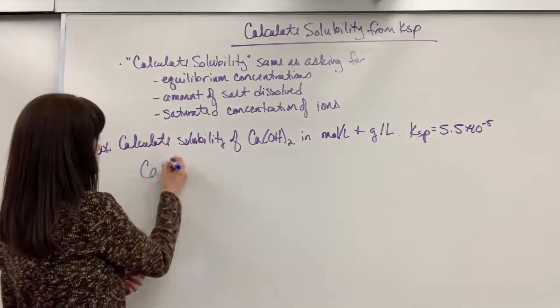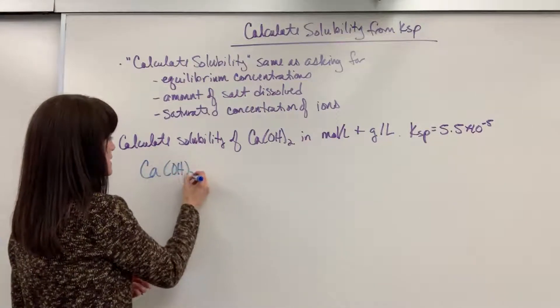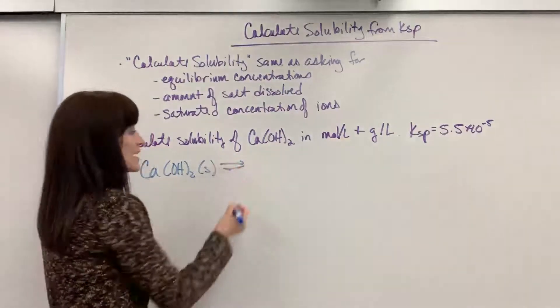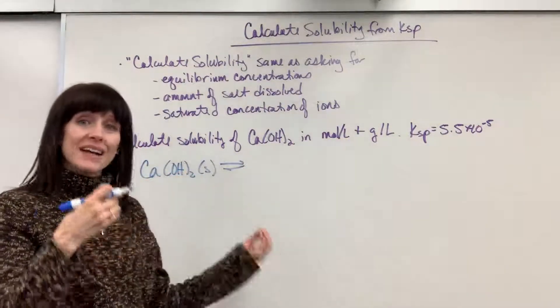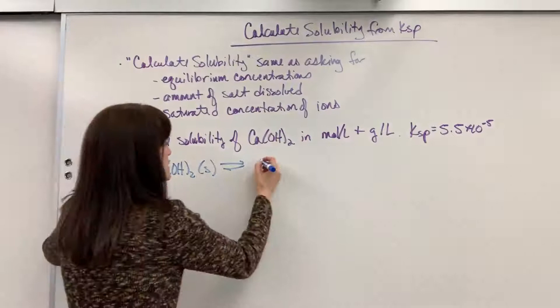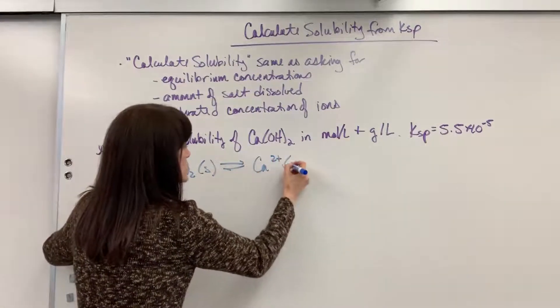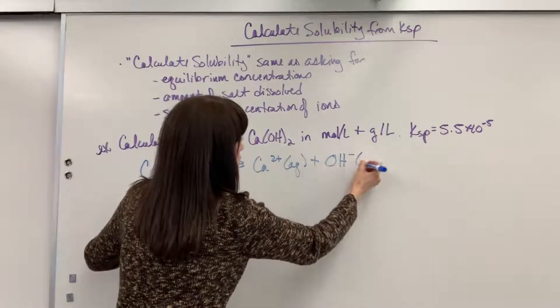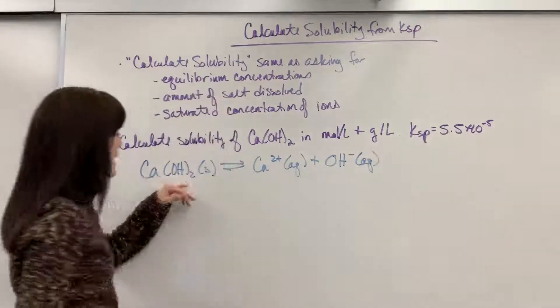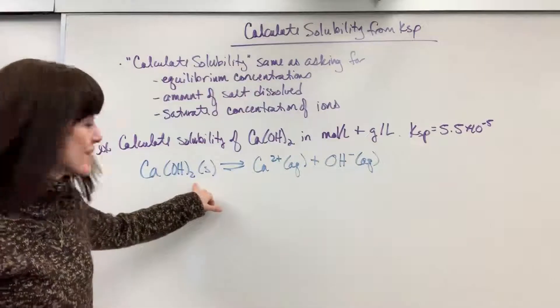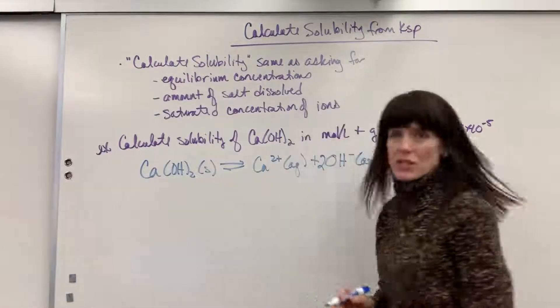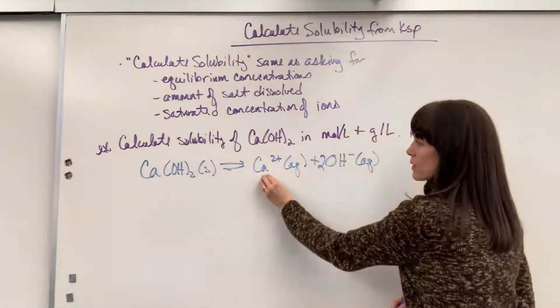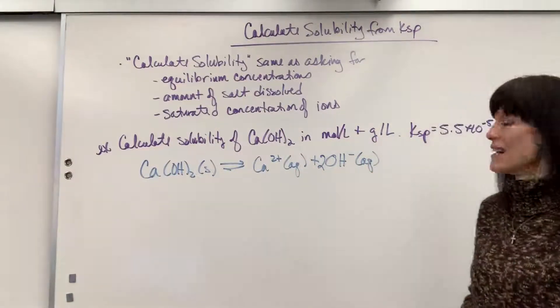First place I always begin is writing this equation—it's just the dissolution of the salt. So we're going to have calcium hydroxide as a solid. Always understood that the salt's a solid and that you drop it in water and it will dissociate into its cation and anion. The cation is calcium 2+ aqueous plus the anion is the hydroxide OH-. And I look, make sure this is balanced. We've got two of the hydroxide so I have to put a two here.